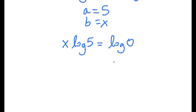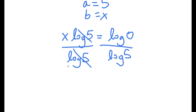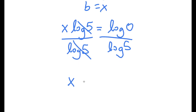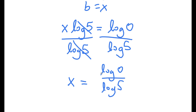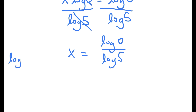So now I have x times log 5 is equal to log 0. From here, I'm going to divide both sides by log 5 because we want to isolate x. These two cancel out and I'm left with x is equal to log 0 over log 5. We'll plug in the values — log 5 is equal to 0.6990.